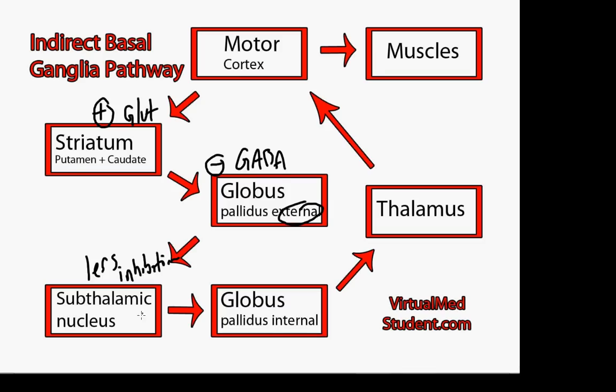So this means that the subthalamic nucleus neurons now become more active, and they are able to stimulate the internal segment of the globus pallidus. That's stimulatory, and that's via the neurotransmitter glutamate.